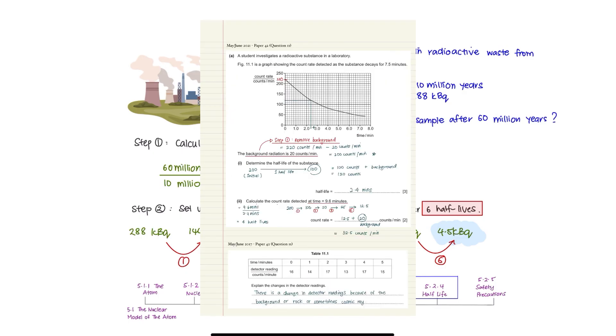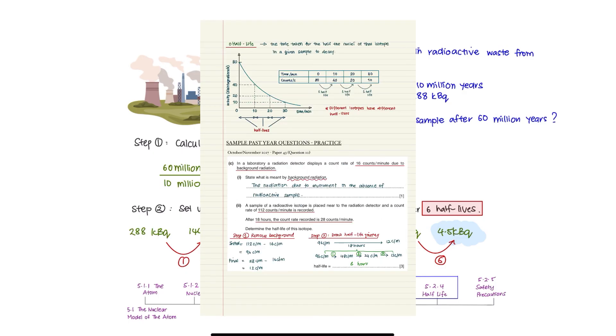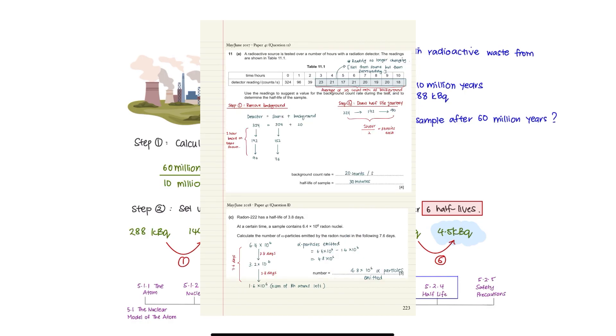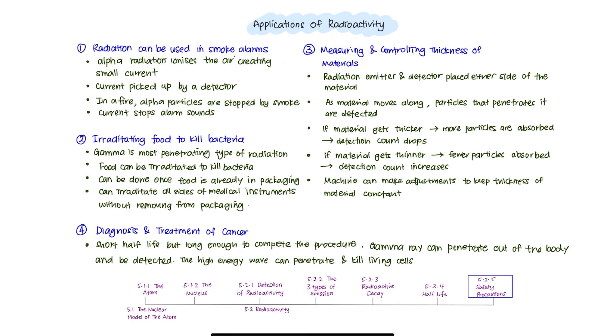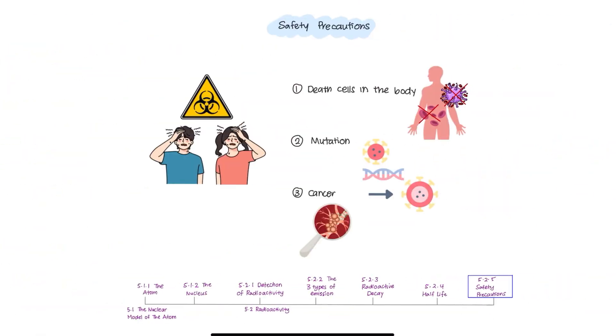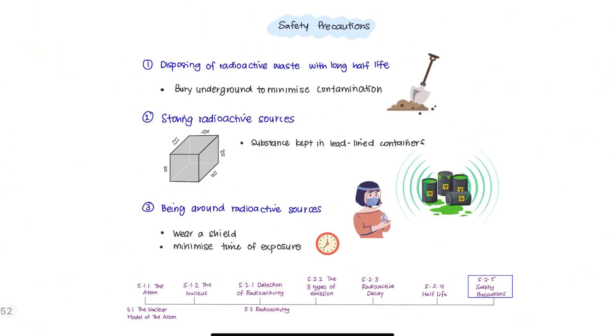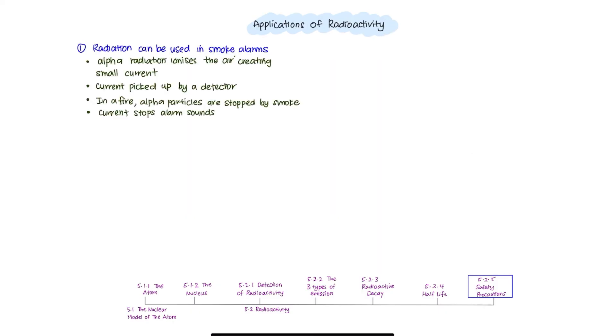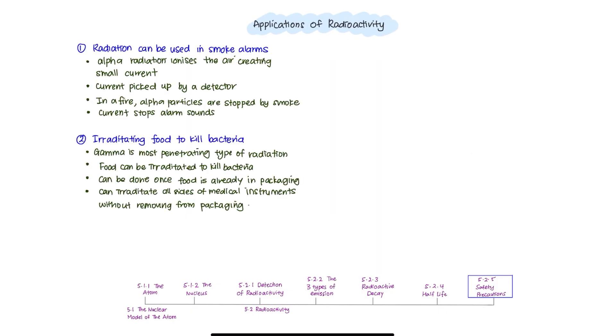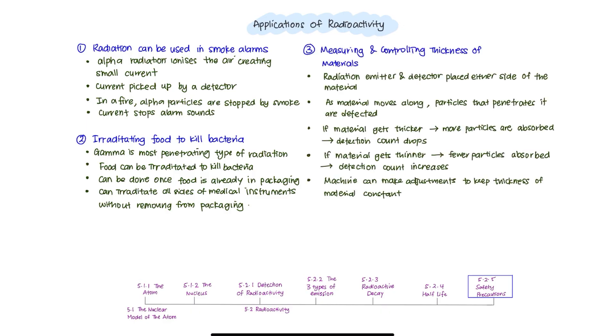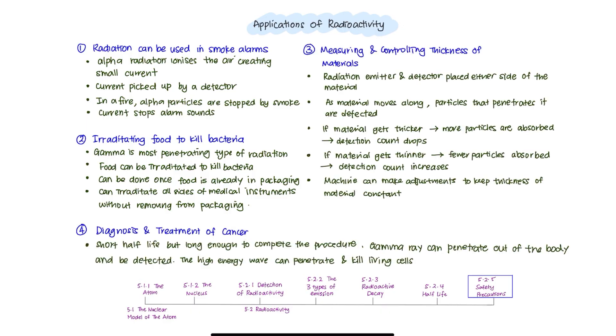I will discuss more examples which include background radiation for half-life calculation in a separate video. Now, let's finish off this chapter by talking about some uses of radiation and safety precaution on how to handle them. Radiation can be used in smoke alarms, eradicating food to kill bacteria, measuring and controlling thickness of materials, and diagnosis and treatment of cancer. You can pause this video and write down how the radiation applies to real-life application.